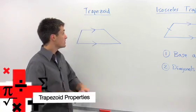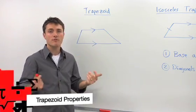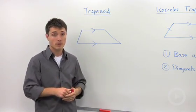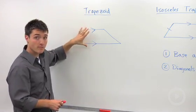One of the common quadrilaterals is a trapezoid. And what defines a trapezoid? Well, the only thing that we know about a trapezoid is that we have one pair of parallel sides.